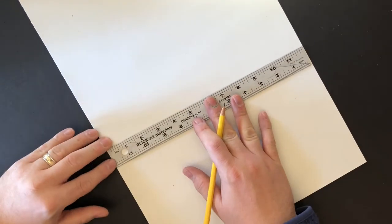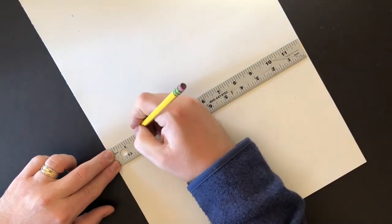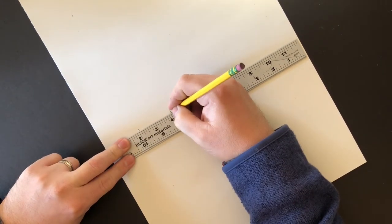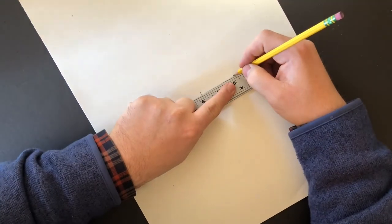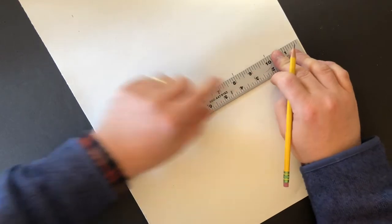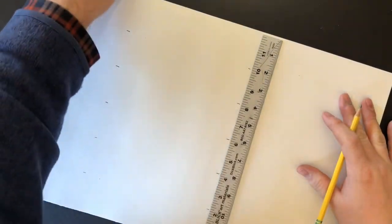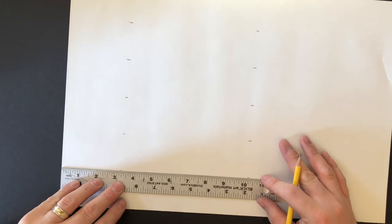Get to the near the middle of my paper. My paper's kind of long, so I'm going to do two, four, six, eight, ten. Doing even numbers, and then what I'm going to do is just connect them. Line them up as best I can.